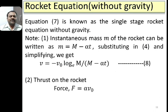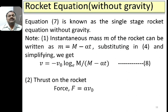Two important points to note: the instantaneous mass of the rocket can be written as m = M − alpha×t, where t is the time elapsed. Substituting this into equation 6, the instantaneous velocity becomes v = −v0 × ln(M / (M − alpha×t)). If a question asks for instantaneous velocity after a given number of seconds, use this equation. The thrust on the rocket is F = alpha × v0, where v0 is the velocity of hot gases and alpha is the rate of burning of fuel.